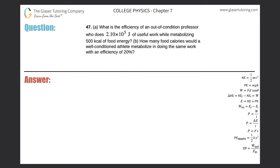Number 47, letter A. What is the efficiency of an out-of-conditioned professor who does 2.1 times 10 to the 5 joules of useful work while metabolizing 500 kilocalories of food energy?